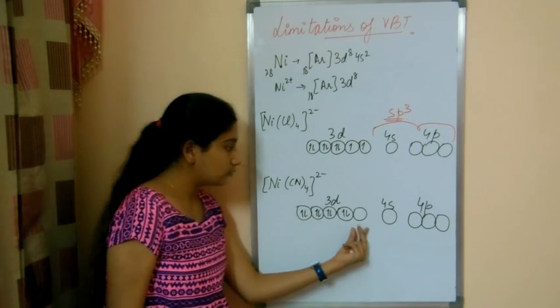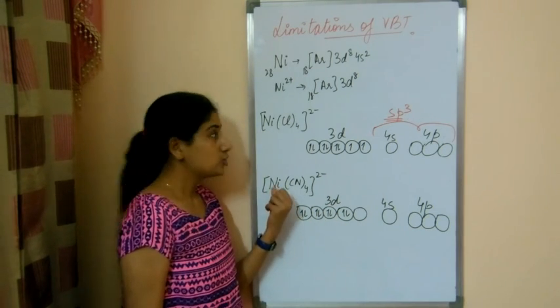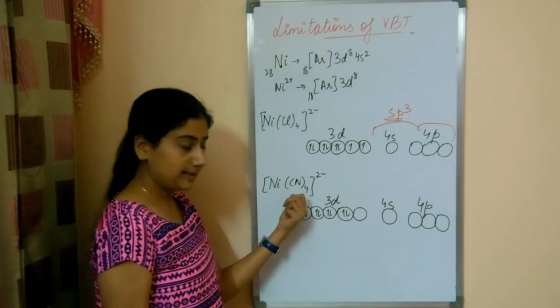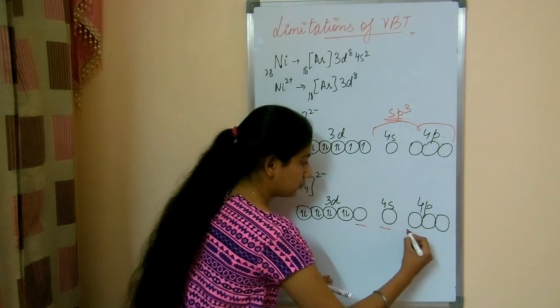So what happens now, this is also an empty orbital in nickel. So according to valence bond theory, the empty orbitals overlap with the ligands. So in this, the first 4 empty orbitals: 1, 2, 3, 4.